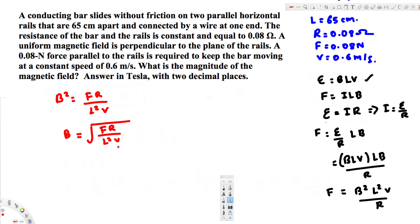Now let's go ahead and plug the values. We have the force that is 0.08 multiplied by the resistance, also 0.08. Then L squared is the separation, 65 times 10 to the power of minus 2 (converting centimeters to meters), so 65 times 10 to the minus 2 squared, times the velocity that is 0.6.